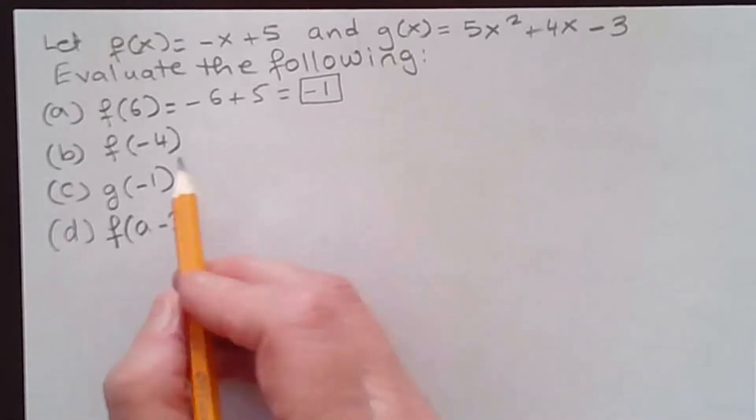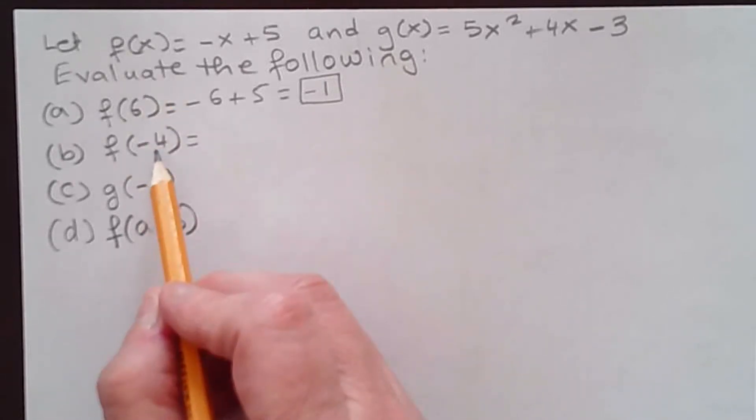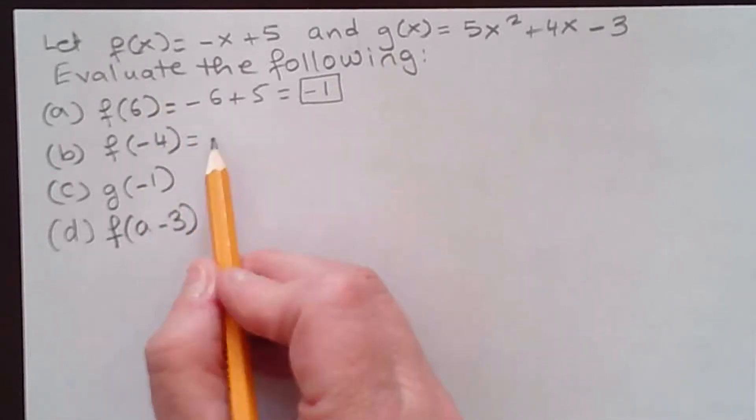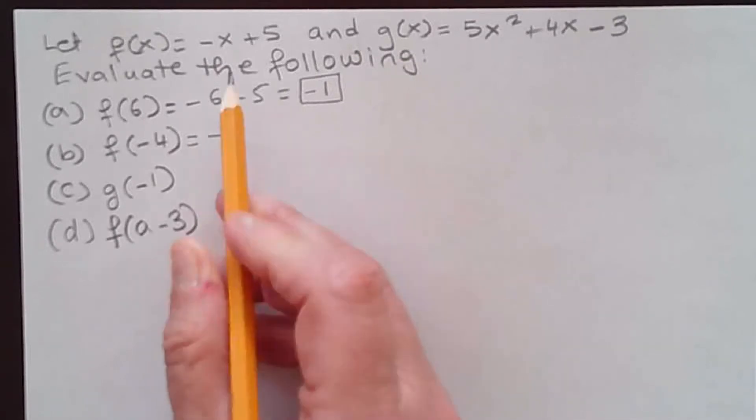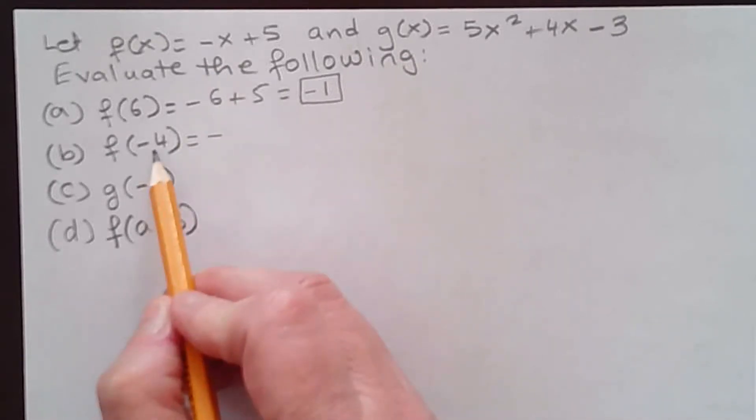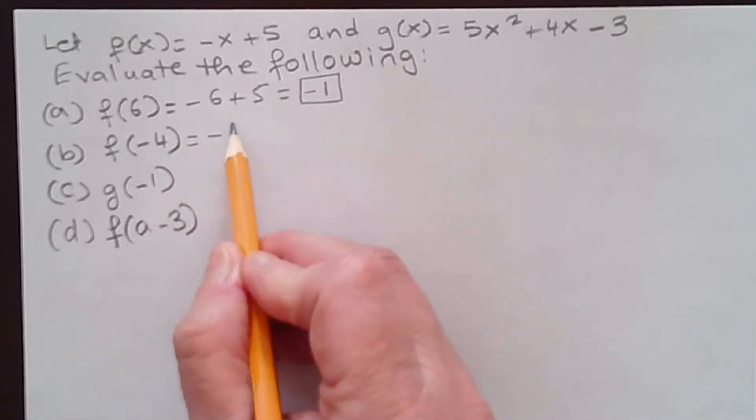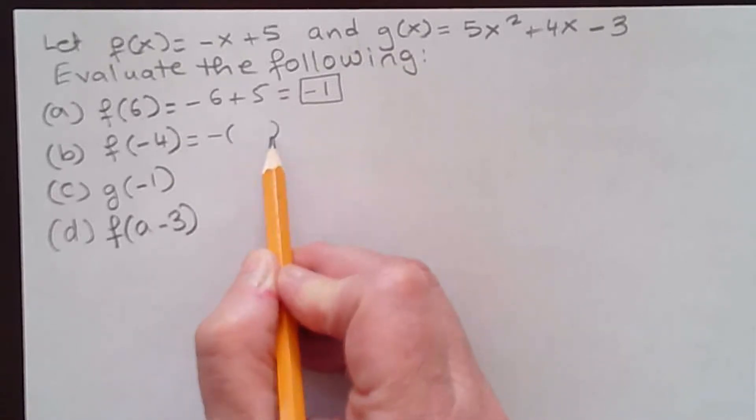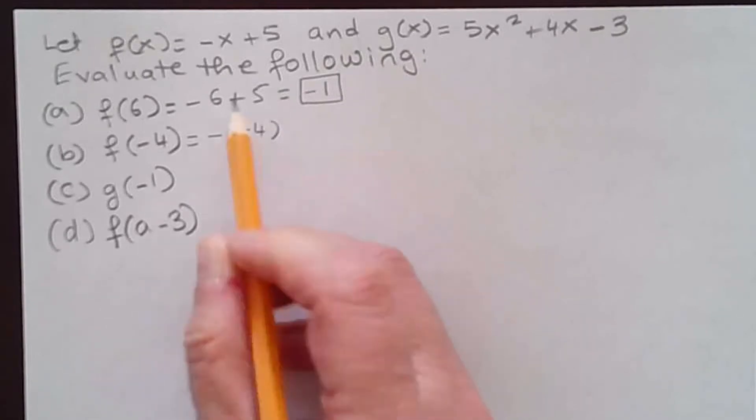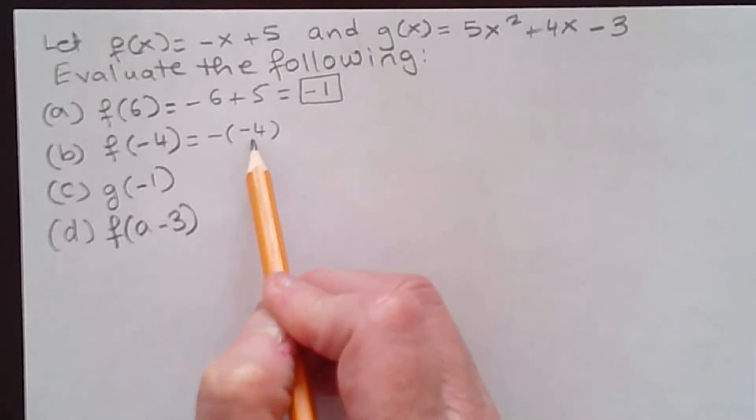Now part B, they want us to evaluate f(-4). Again, I want to replace x with -4. So we have negative, and I have to replace x with -4. Be careful. I'm going to put parentheses here because x is negative now. So it's the outside negative, and x I'm replacing with -4, plus 5.